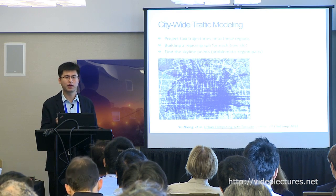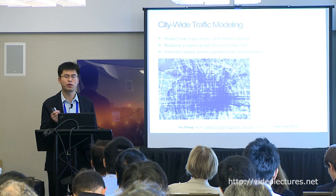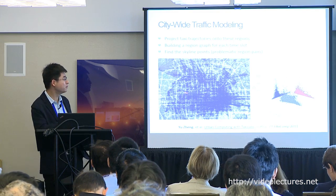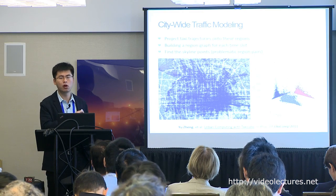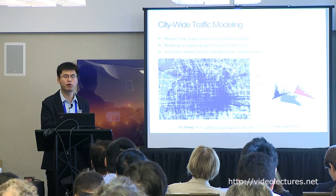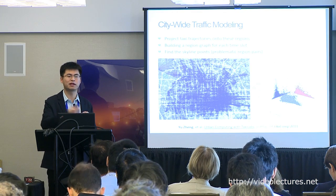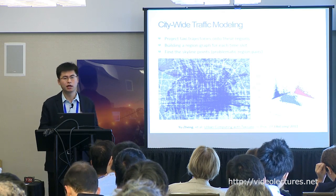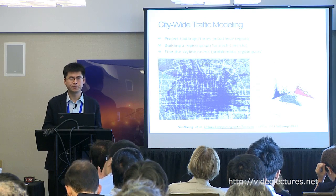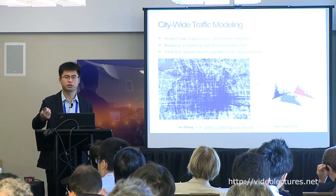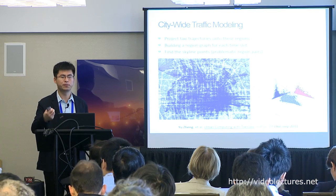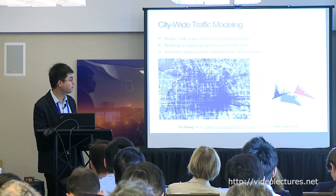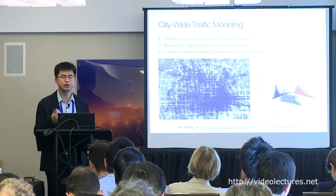How can we identify two regions that are not very well connected? We extract three features from each link. One is traffic volume — the number of vehicles traveling from one region to another. The second feature is the actual travel speed of these vehicles traveling between the two regions.